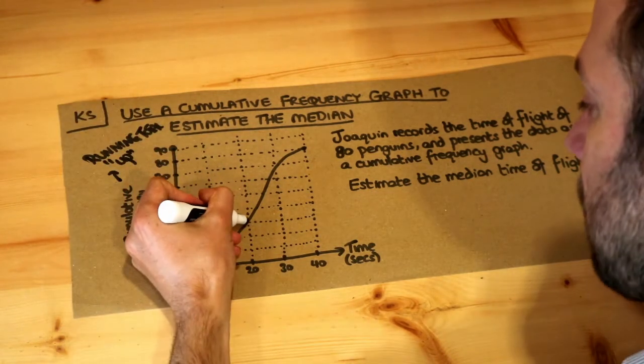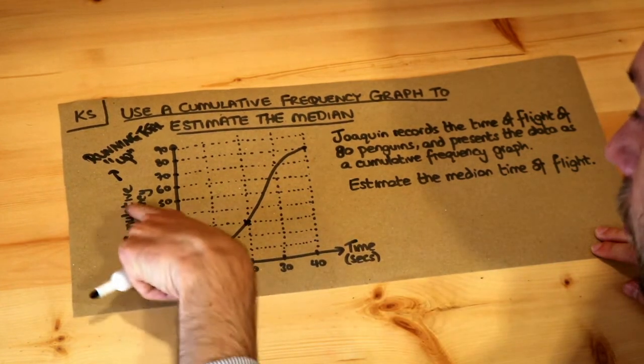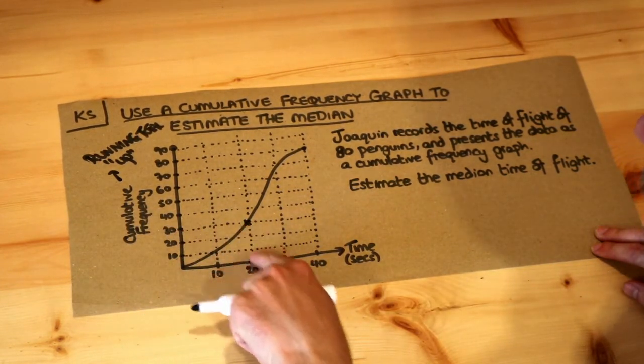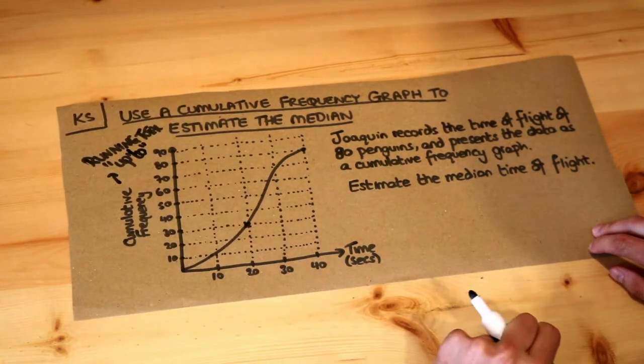So for example, if we took this point here, that means that on the cumulative frequency, 30 people have a time of up to—those are magic words—up to 20 seconds.